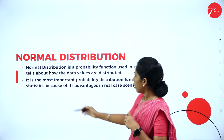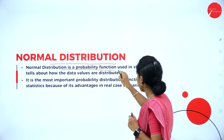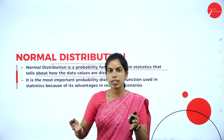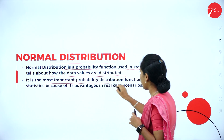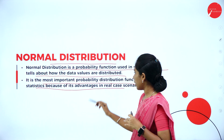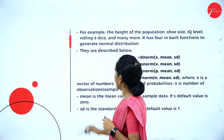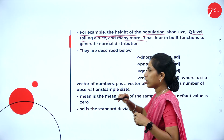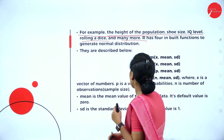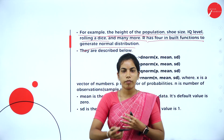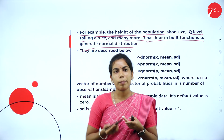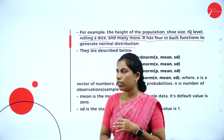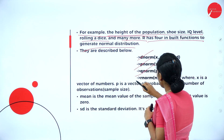Normal distribution is a probability function used in statistics that describes how data values are distributed along a range over a given set of time. It is the most important probability distribution function used in statistics because of its advantages in real cases. Real-time examples include the height of a population, shoe size, IQ level, rolling a dice, and many more. R has four inbuilt functions for normal distribution — similar to binomial and Bernoulli distributions — which are dnorm, pnorm, qnorm, and rnorm.